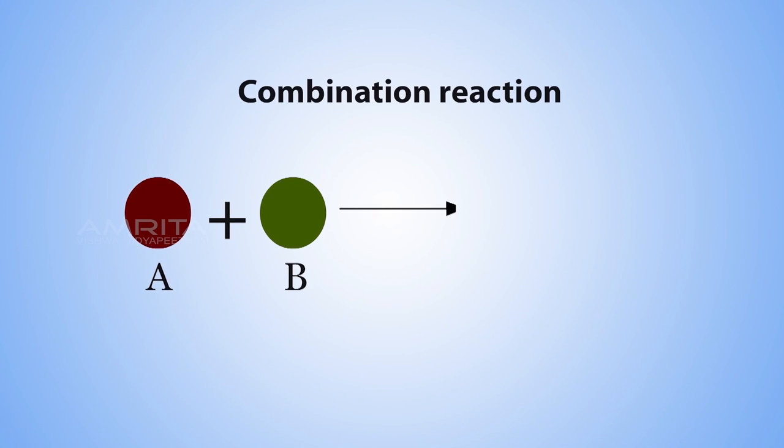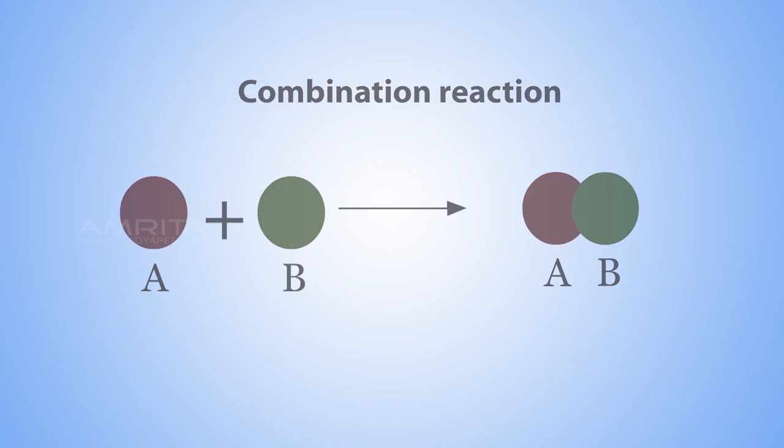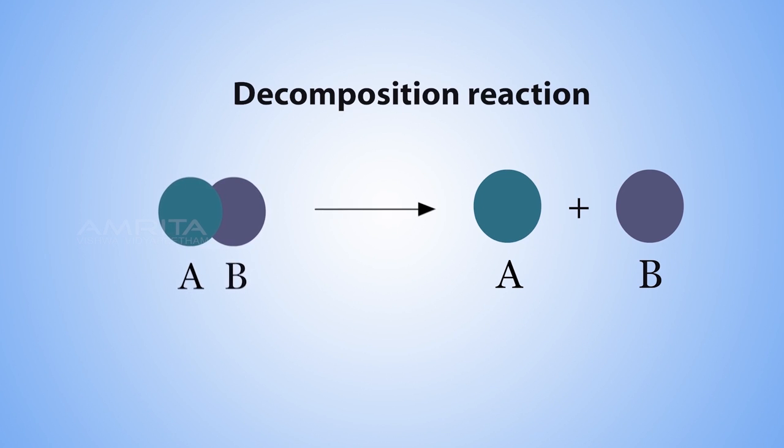In a combination reaction, two or more substances combine to form a new compound, whereas in a decomposition reaction, a single compound undergoes a reaction that produces two or more simpler substances.